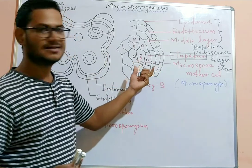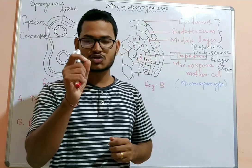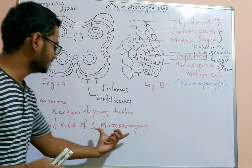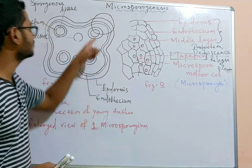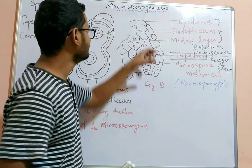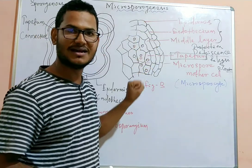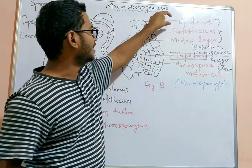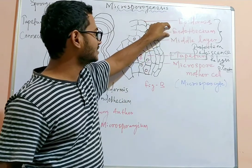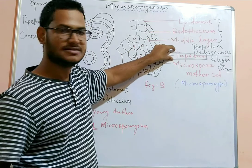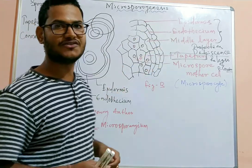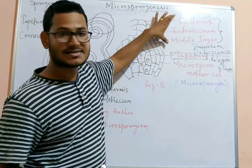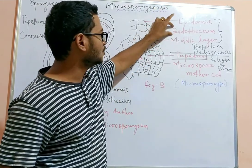The microsporangium is generally surrounded by four different wall layers. We can see the wall of the anther and how it is formed. The four walls from outer to inner are: epidermis, endothecium, middle layer, and the innermost tapetum. These are the four different structural layers of the anther, each with distinct functions.